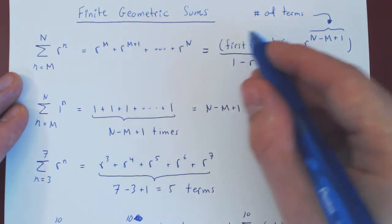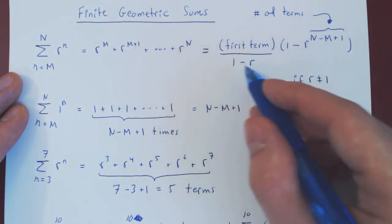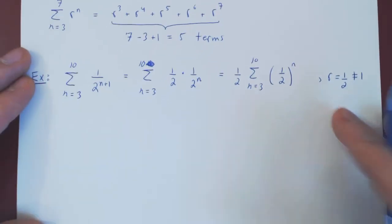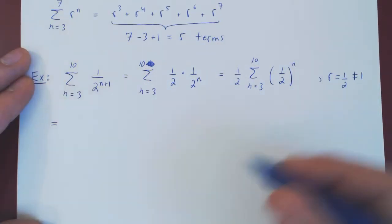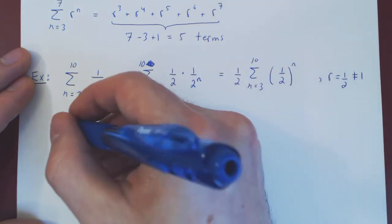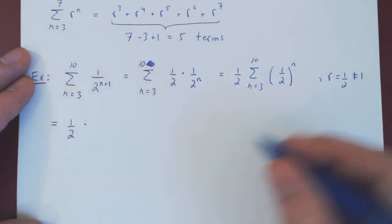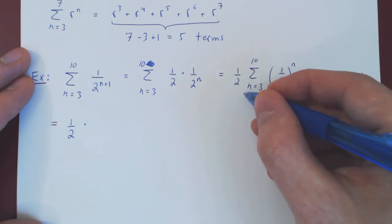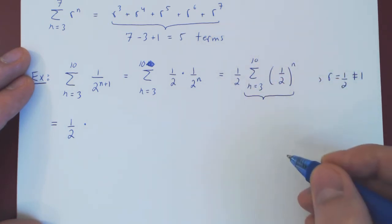So the first half of the formula is the first term over 1 minus r. Don't forget the 1 half as a constant multiple, so it just stays there.